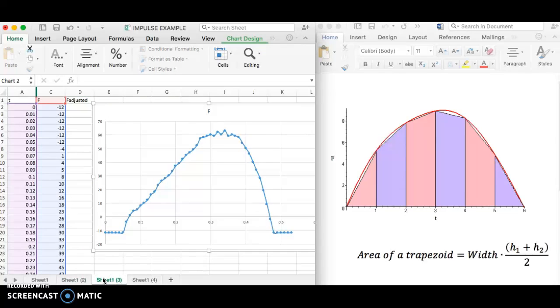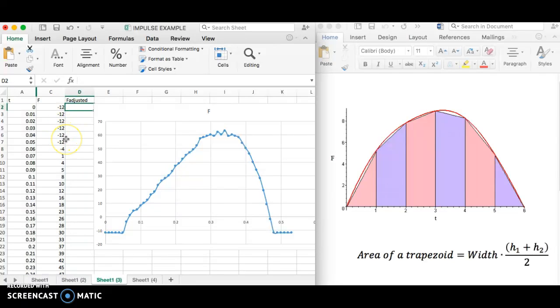If, on the other hand, your minimum value is a negative number, you have the opposite problem. So for this one, I shifted everything down by 12. And so, oh no, all of my values are too low. They're all 12 newtons lower than they ought to be.